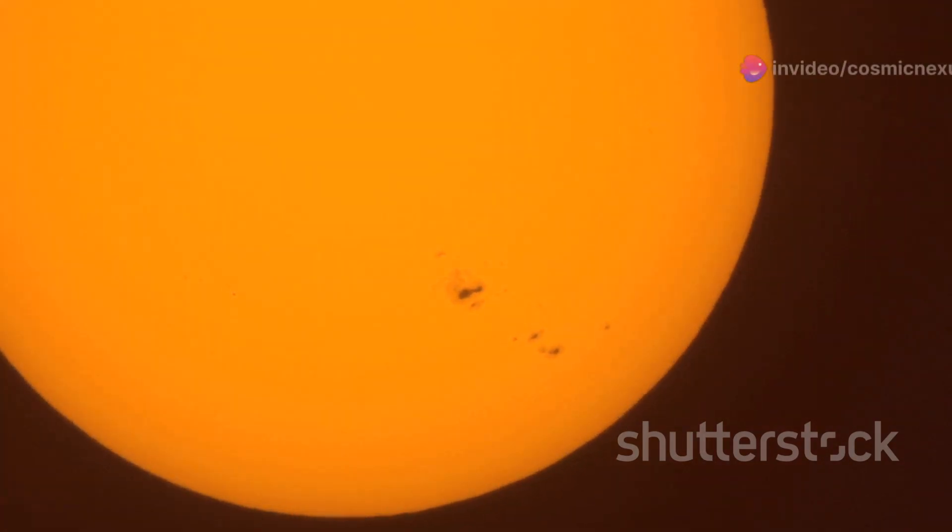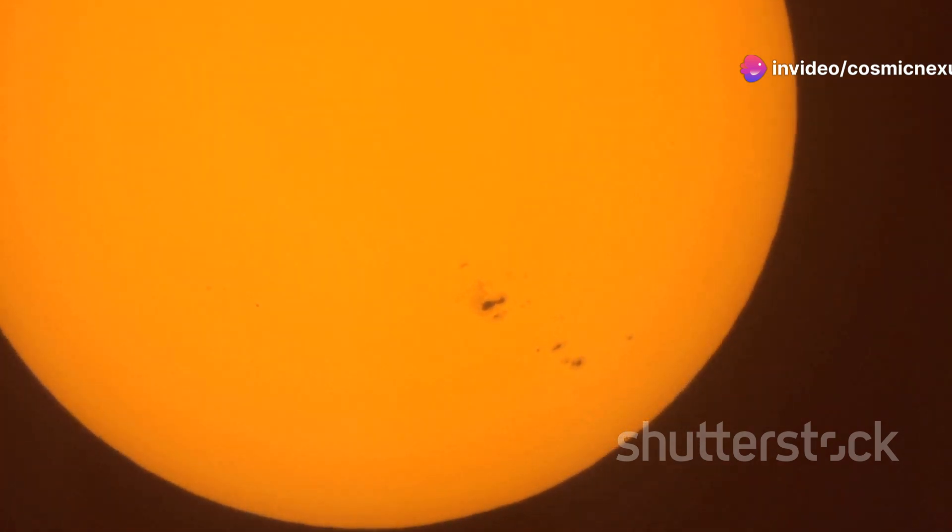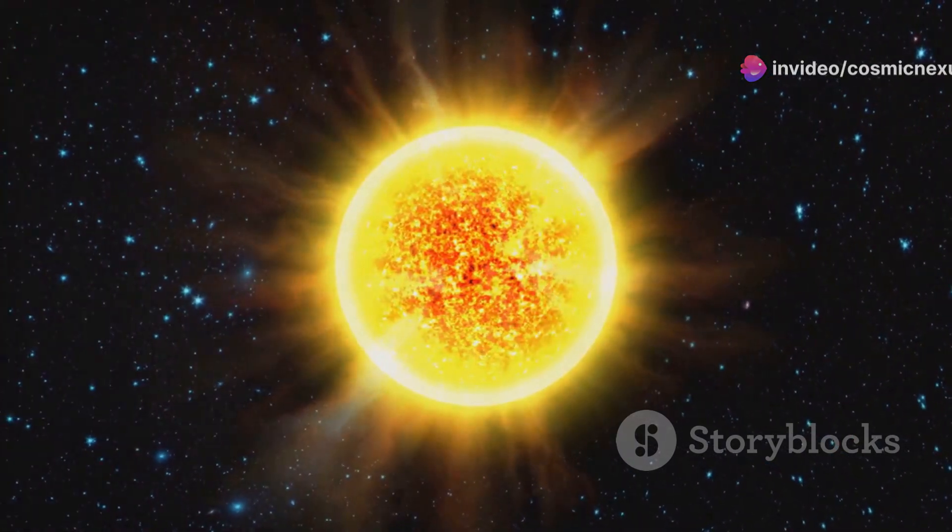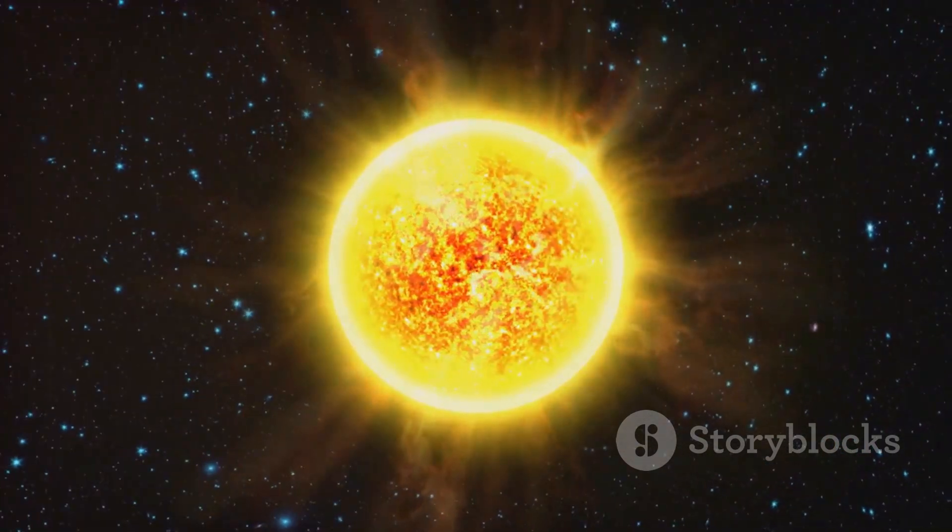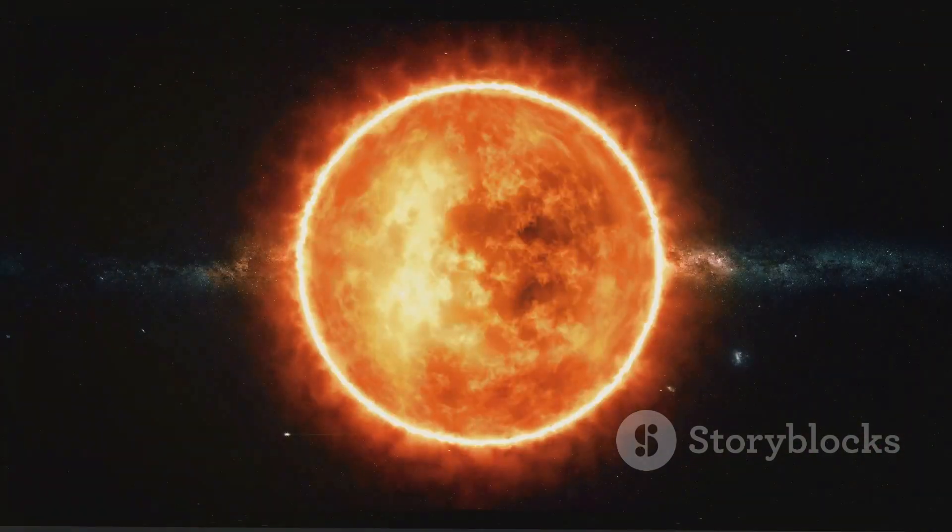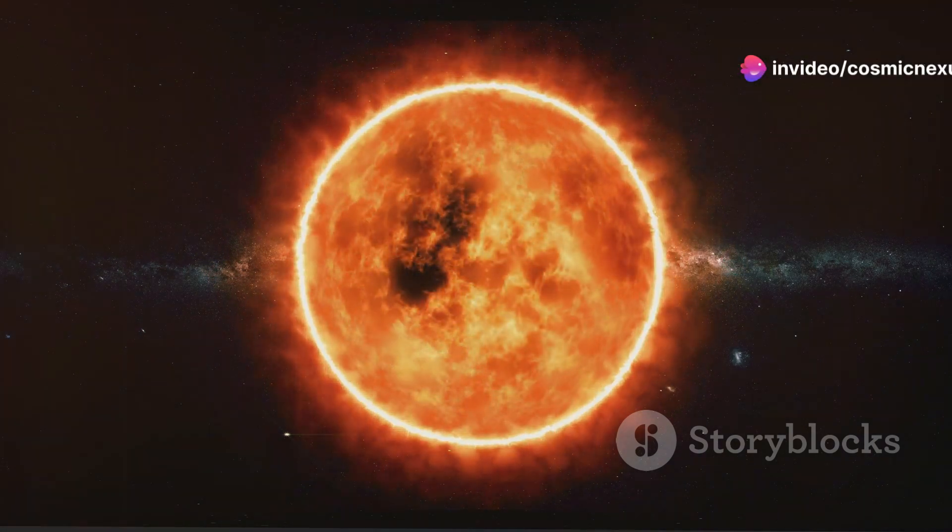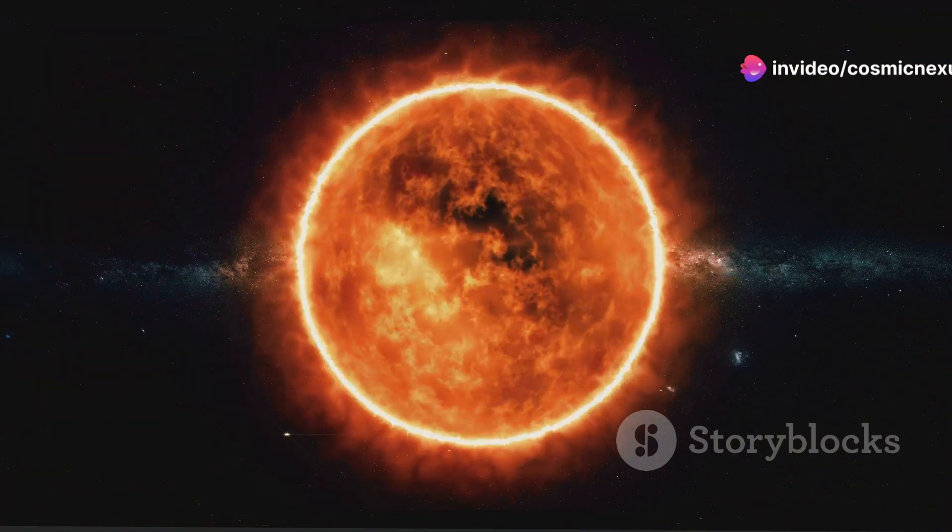Star spots, similar to the sunspots we observe on our own sun, can also affect the star's brightness. These dark, cooler regions on the star's surface are caused by variations in magnetic activity. The presence of large star spots on Betelgeuse could temporarily dim its overall brightness, and their disappearance or movement could explain the recent surge in luminosity.